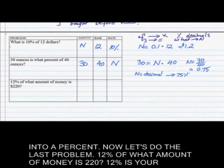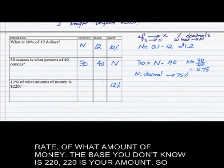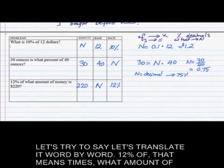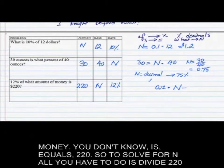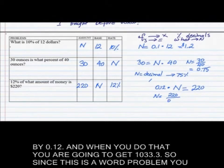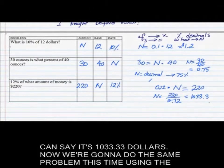Last problem: 12% of what amount of money is 220? 12% is your rate, the base you don't know, and 220 is your amount. Translating: .12 × n = 220. To solve for n, divide 220 by .12, and you get 1033.3. Since this is a word problem, the answer is $1033.30.